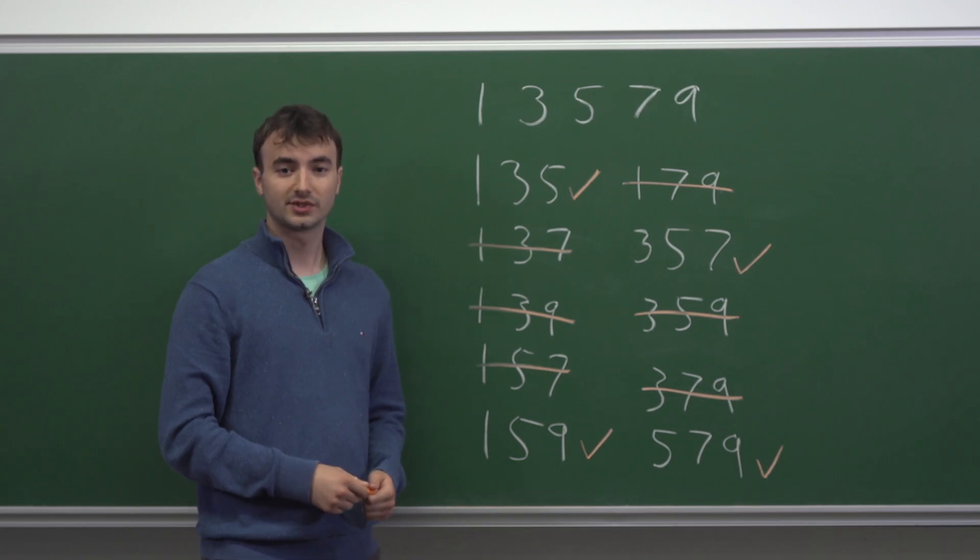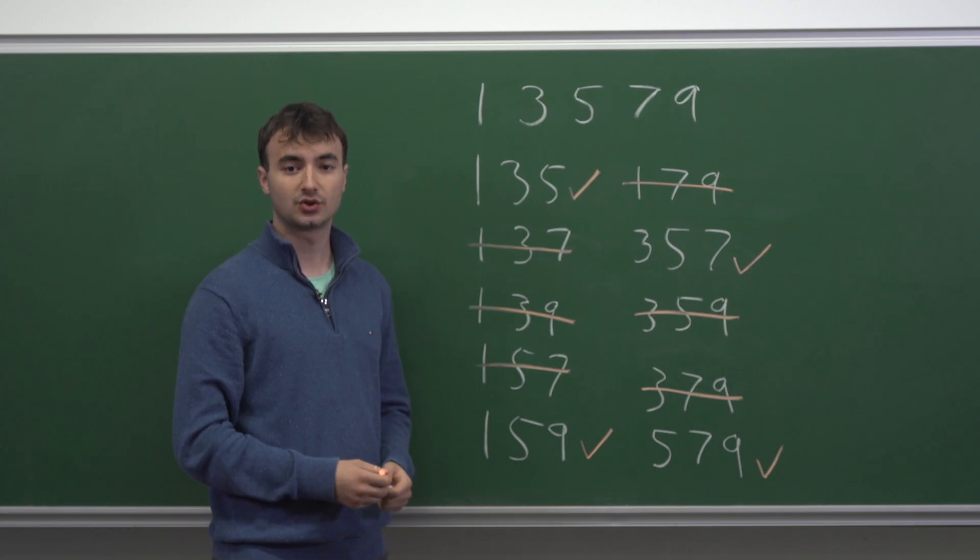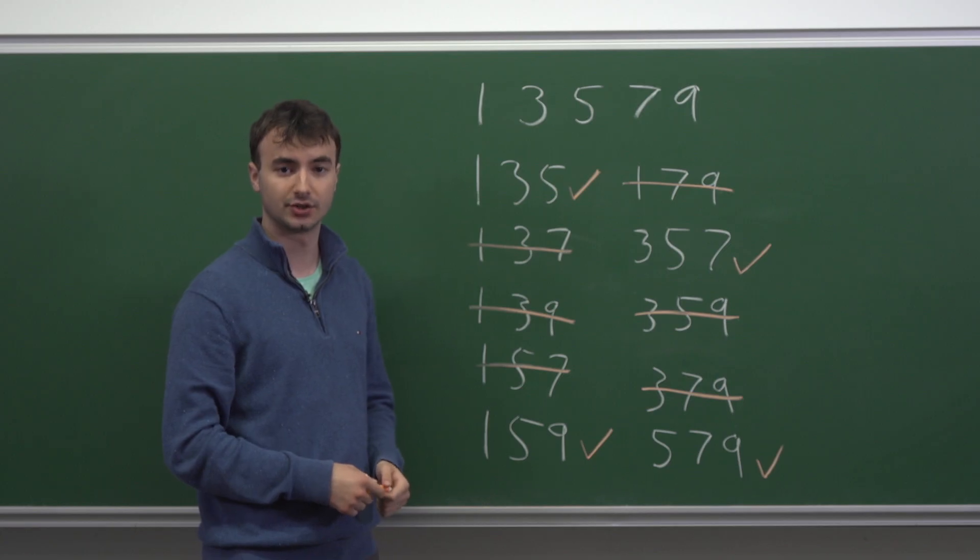So there are four possible collections of three digits that we can use to form our three-digit number. Now, all of these collections have three distinct digits, so we can arrange them in any way that we want. For each collection, there's three possibilities for the first digit.